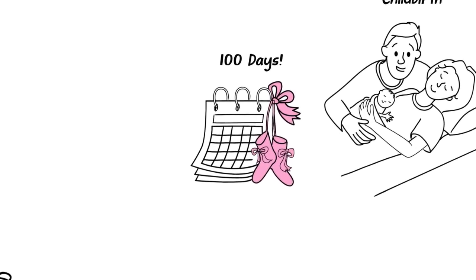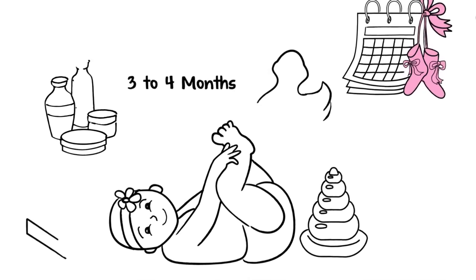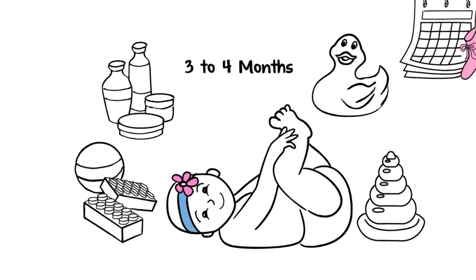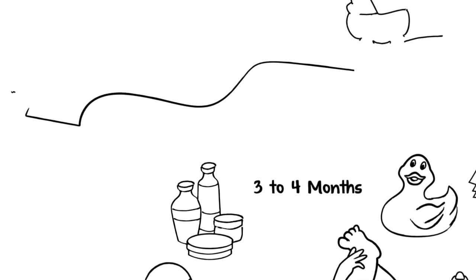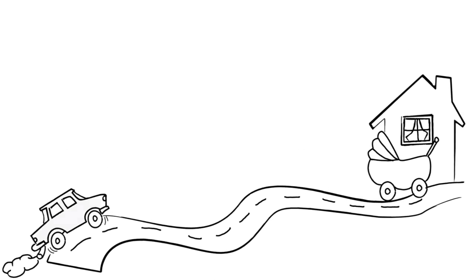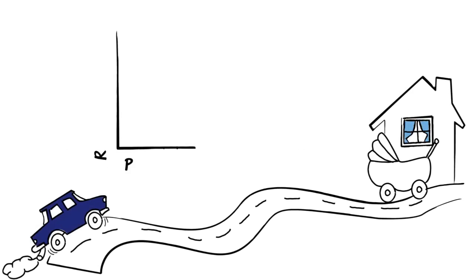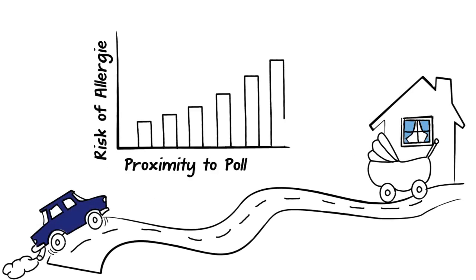By just three to four months of age, almost all Canadian children have been exposed to at least one phthalate. Babies living in areas with higher exposure to air pollution have higher risk of developing allergies, as detected by skin testing at one year of age.